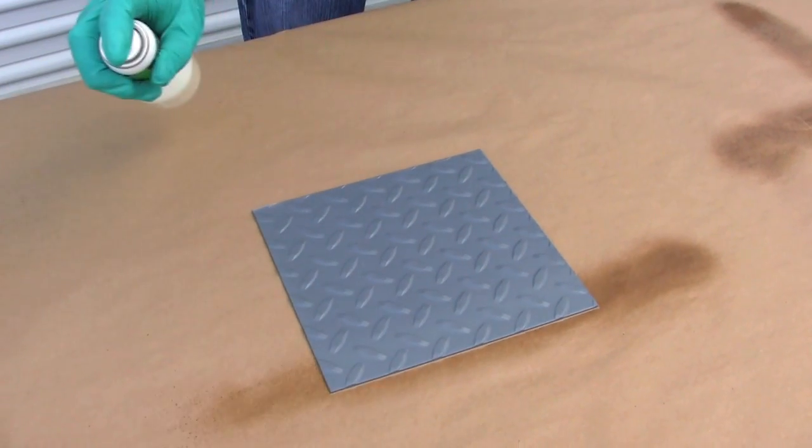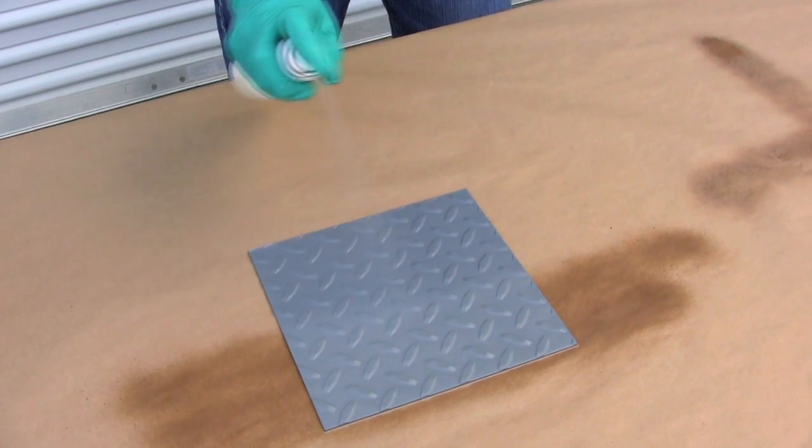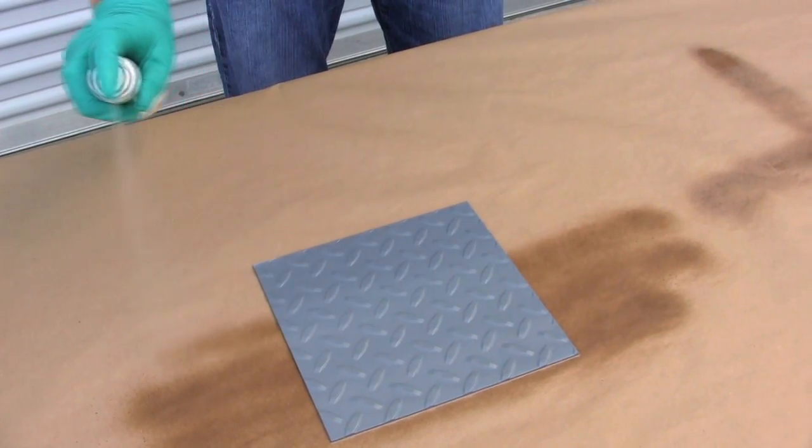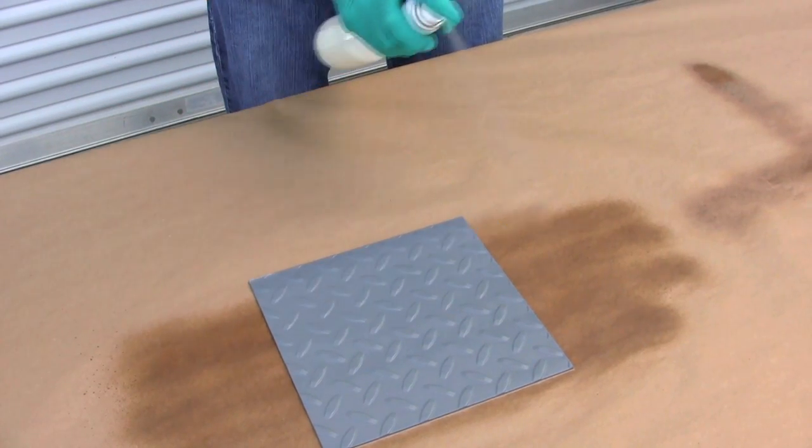Apply multiple thin and uniform coats. Vertical and horizontal passes are recommended. A thin film is all that is needed. Over spraying may result in increased dry times or increased color effect on the substrate.